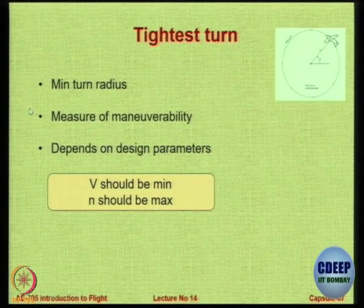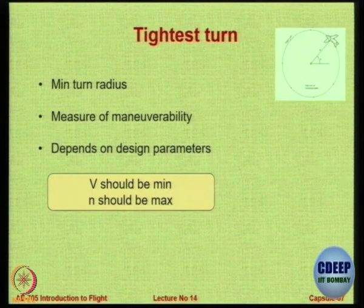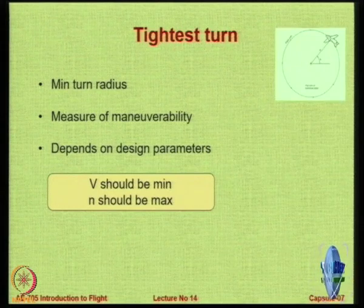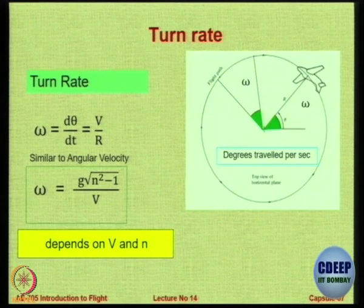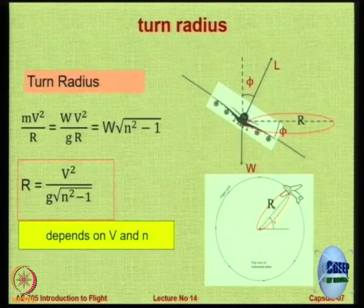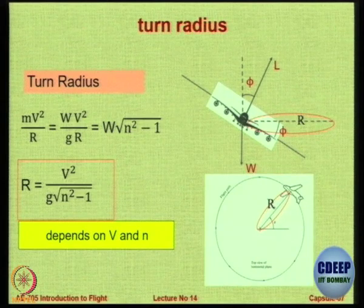Minimum turn radius is also a measure of maneuverability. Going back to the formula for turn radius, R is proportional to V² and inversely proportional to √(n²−1). To minimize R, you want V to be minimum and n to be maximum. Similarly for turn rate ω = G·√(n²−1)/V, you again want V minimum and n maximum. So the condition is the same for both tightest turn and fastest turn rate.